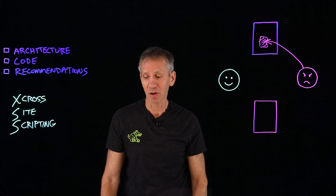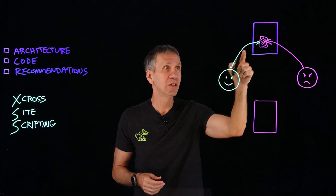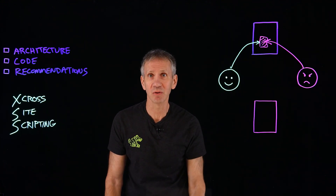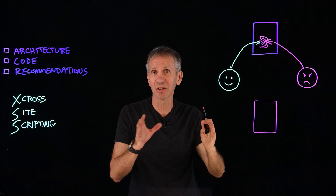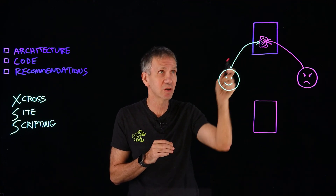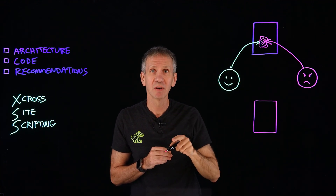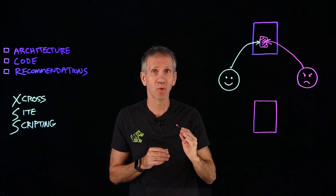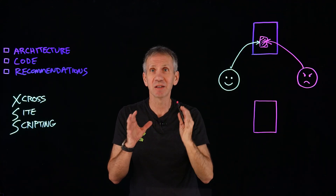Now this good guy comes along, unsuspecting, visits that site, and either hovers over it or clicks the link, which causes the script to execute. The code that the attacker has injected — and that's the key word, this is an injection type of attack, similar to SQL injection but with different code — is now going to run in this victim's browser. But here's the trick: it's running under the context of that trusted website, even though this is untrusted code. That's where the bad guy is taking advantage.